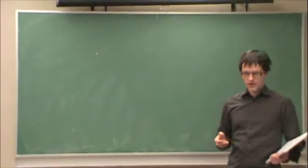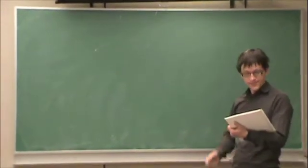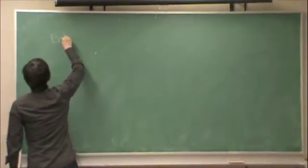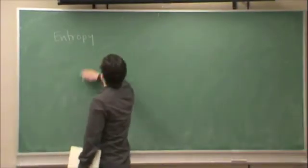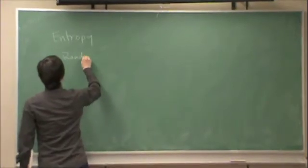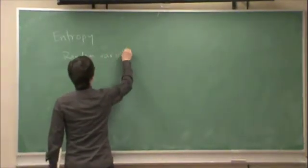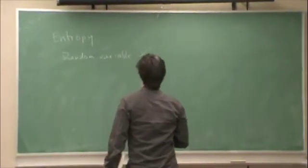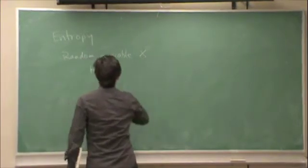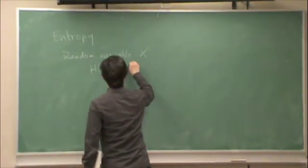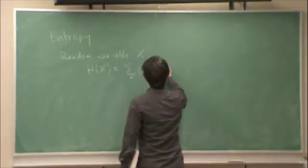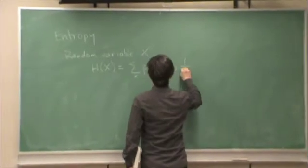We left off last time with entropy. So if we remember entropy, if I have a random variable X, then entropy, the entropy of X, is equal to the sum over all possible x of the probability of that value of x times log 2 of 1 over the probability of x.